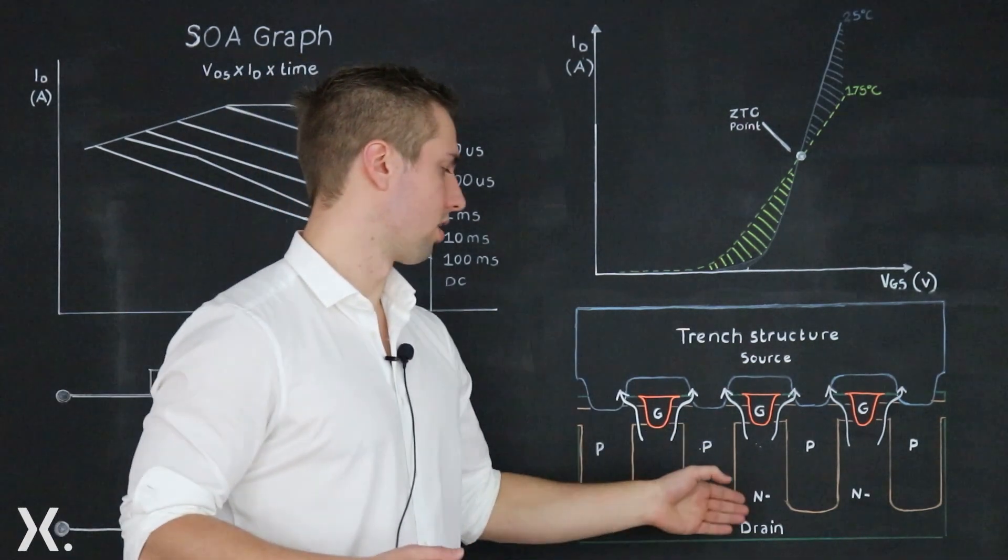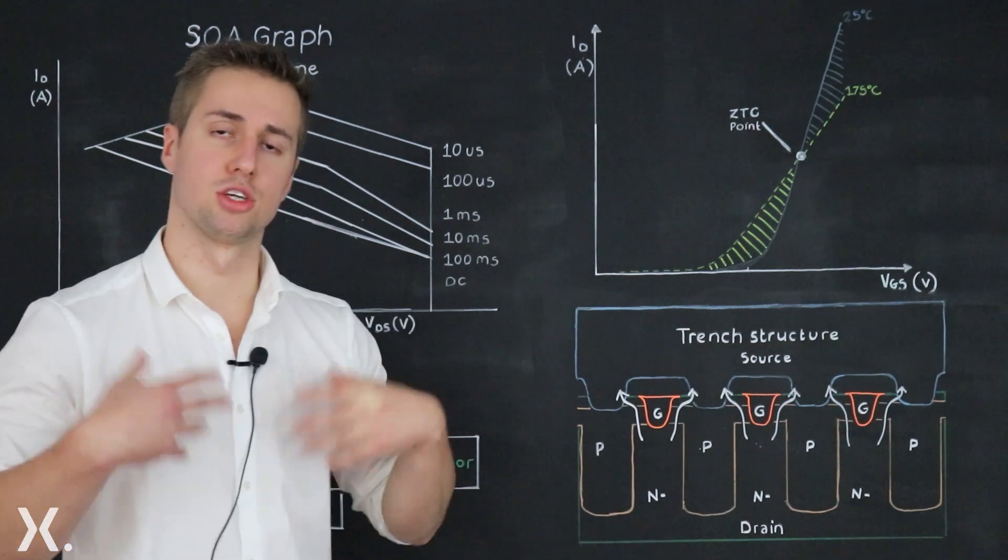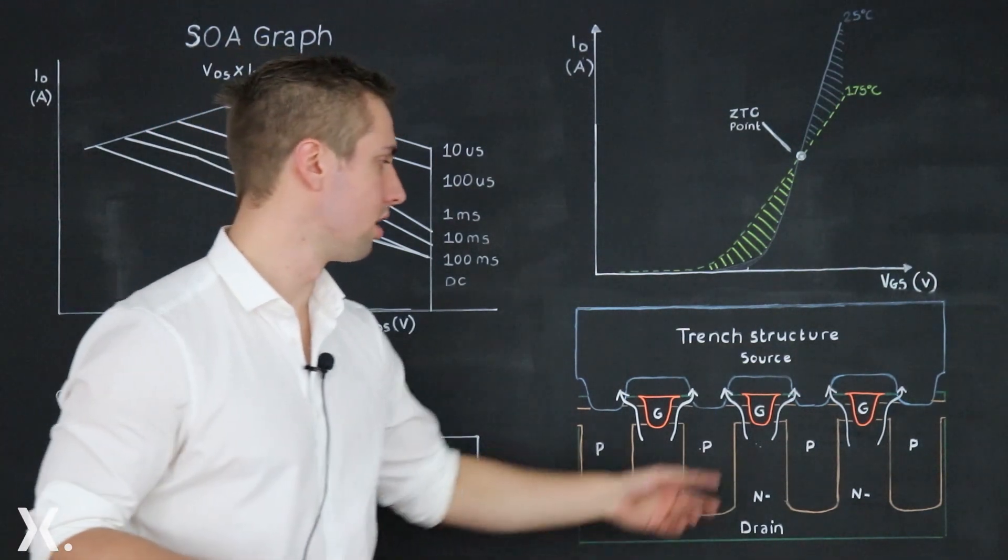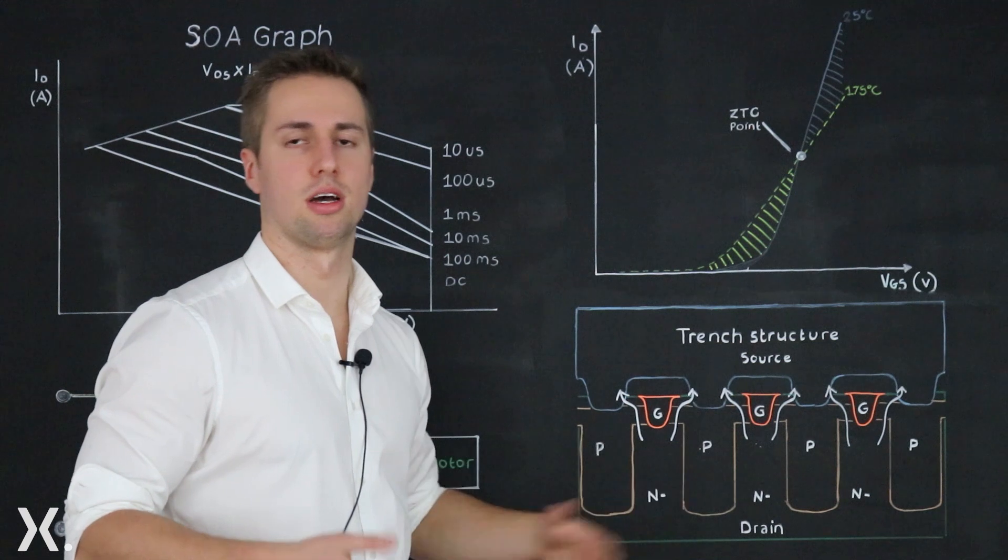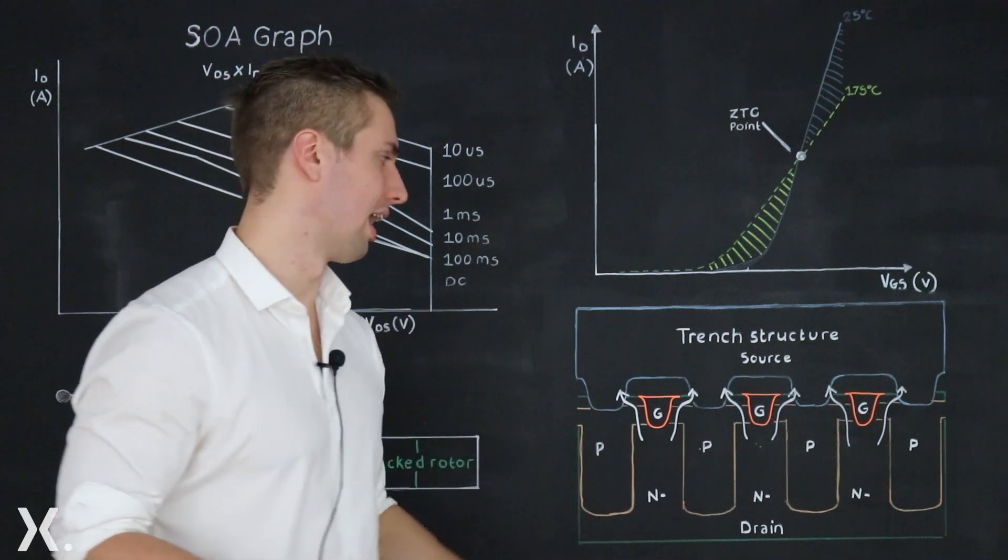This is then current flowing from the drain up to the source. With a stronger gate voltage applied more free charge carriers are generated which means RDS on is reduced allowing more current.